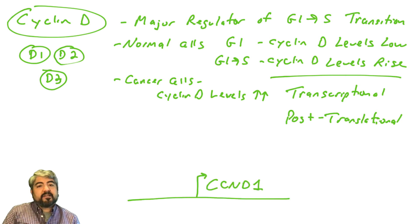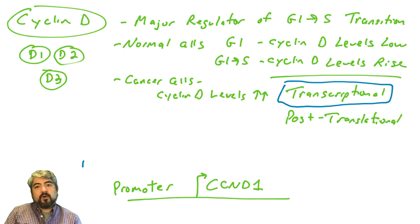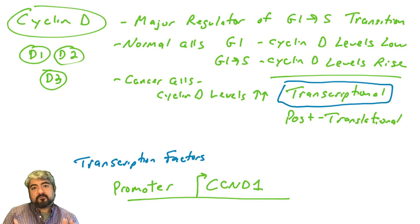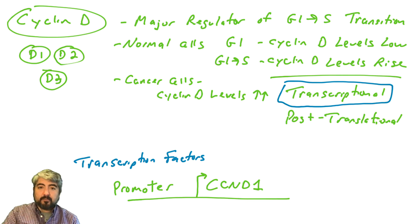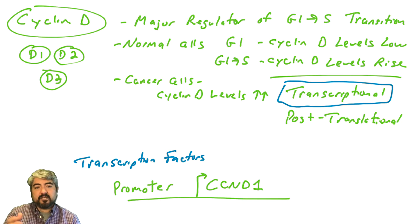The cyclin D1 protein is encoded by a gene called CCND1. What regulates the CCND1 gene? If we're talking about gene regulation, we're probably talking about transcription factors — proteins that bind promoters and transactivate genes. They recruit RNA polymerase and the transcriptional machinery to come and transcribe the gene.